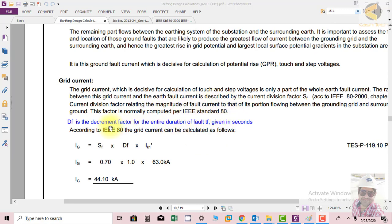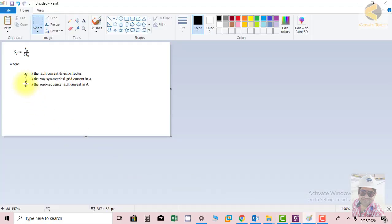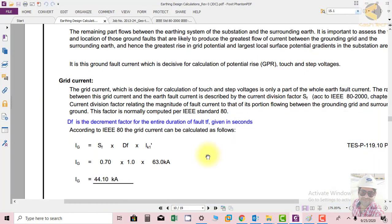I have added the definition we discussed. SF is basically the fault current division factor, and it is a ratio of RMS symmetrical grid current to the sequence current fault current in amperes.